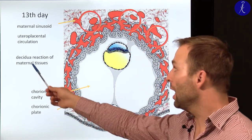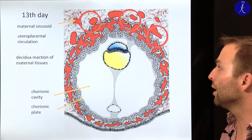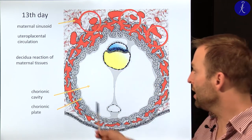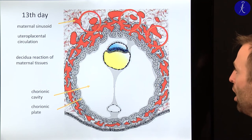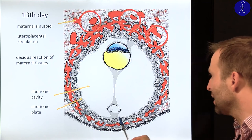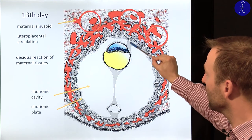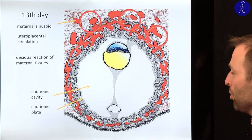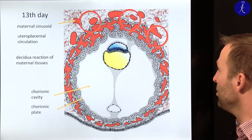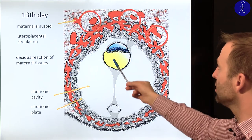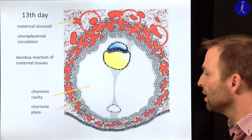You also have the decidua reaction of maternal tissues, induced by progesterone. Decidua is the name of the tissue developing from the uterine mucous membrane. Inside here you have the chorionic plate, which also covers the inside of the cytotrophoblast and surrounds the embryo. You also have a connecting stalk between the two, which will later produce the umbilical cord. Inside you have the amnioblast with the amniotic cavity containing amniotic fluid, one single layer of epiblast, another single layer of hypoblast cells, and the definitive yolk sac.